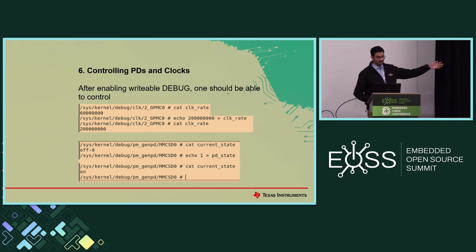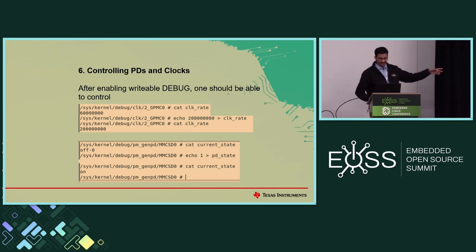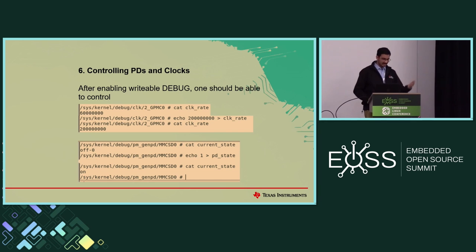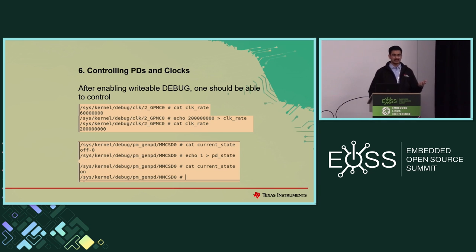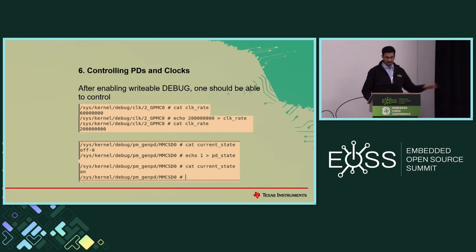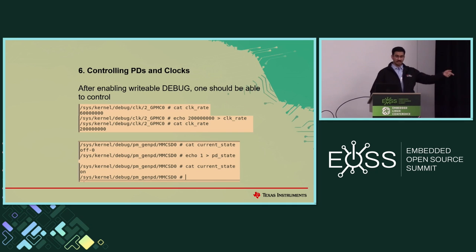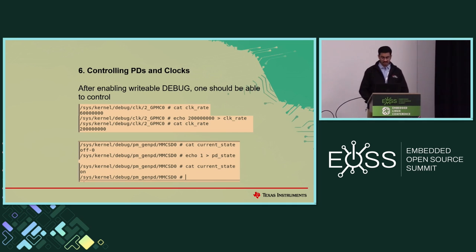After enabling writable debug, you can control clocks and power domains using these steps. For example, I've put two megahertz as an example clock rate, and then once I cat it back I can verify it actually set it to that clock rate. Similarly for power domain, it was initially off, and once I echoed one into it, you can see it has now turned on.